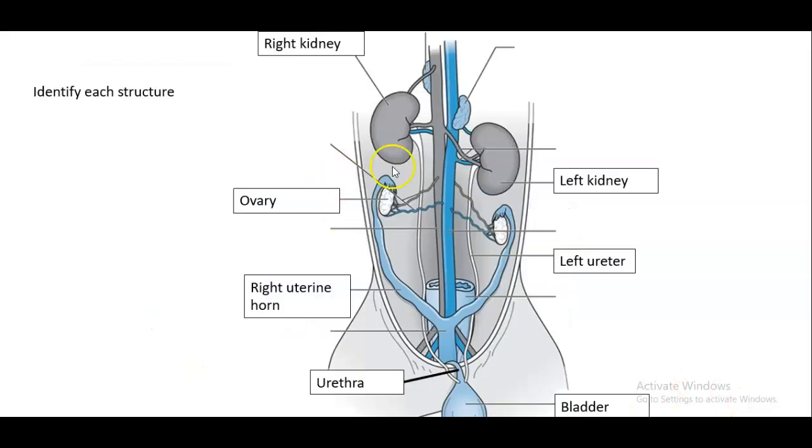And here again, remembering that the right kidney in most mammals is more cranial than the left. So we have the right kidney, the left kidney. We have the left ureter, which is the tube that brings the urine from the kidneys down to the bladder.